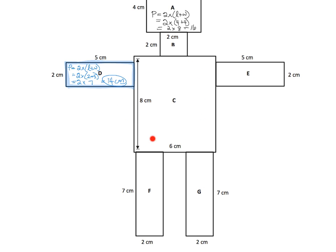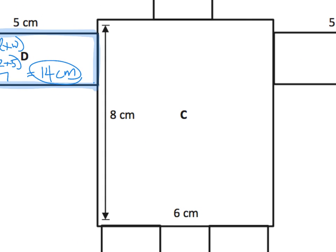Let's do C, because it's a big rectangle right in the middle. So we know, and I'm going to zoom in here. So C, we know that our perimeter formula, and I'll do it in red this time, is 2 times length plus width.